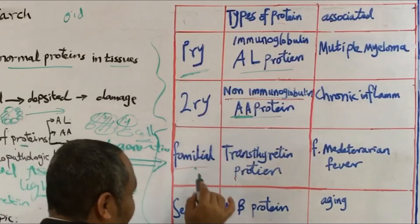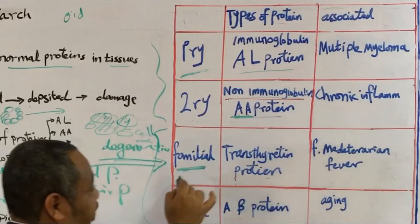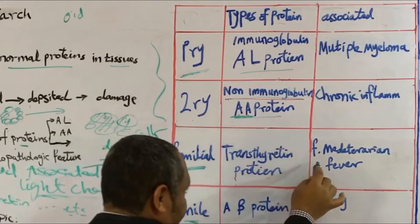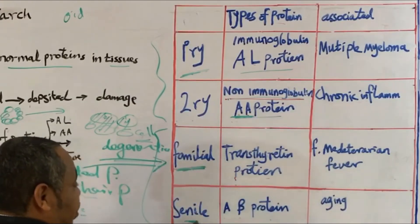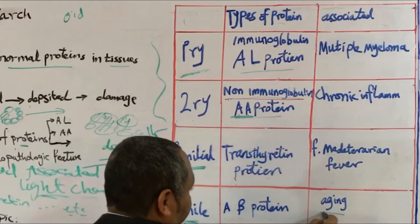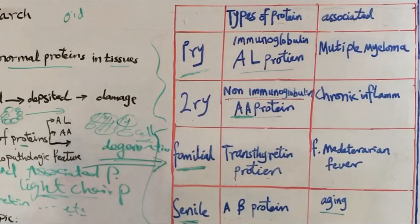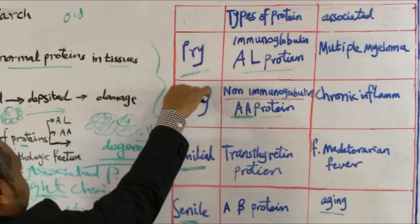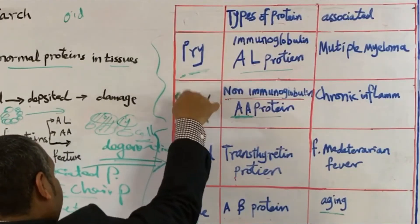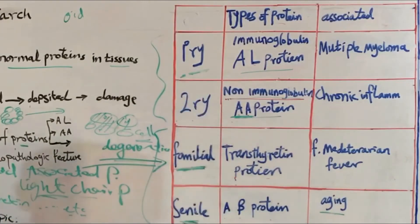And actually you will find that this familial type is found in familial Mediterranean fever. And this one is also found in the aging process, whatsoever aging process is. So these are not very common. So you have to focus on the two, the upper two types of amyloidosis.